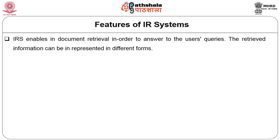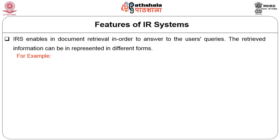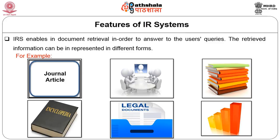An IRS enables document retrieval in order to answer user queries. The received information can be represented in different forms. For example, the database can source bibliographic resources or full text of documents such as journal articles, newspaper articles, textbooks, encyclopedias, legal documents, statistical records, along with audio, graphics, live images or video information. The content can be very different and these have to be addressed holistically in an IRS. The IRS system can have two main types of information: one is structured and the other is unstructured.